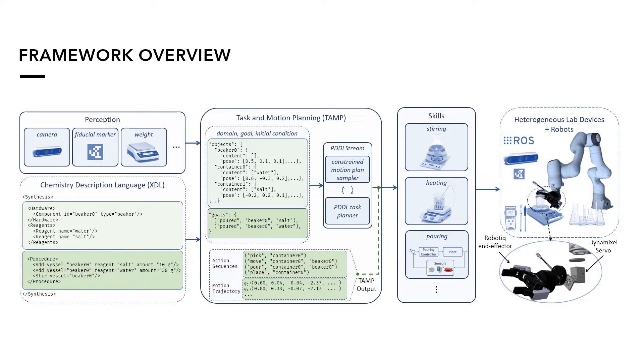The framework is composed of three main components: perception, task and motion planning, and skills. For input, the framework receives chemistry experiment instructions through a standard description language from a chemist and also perceives the workspace. Afterwards, it generates a task and motion plan with considerations for handling vessels with chemical reagents, allowing the robot to perform chemistry experiments autonomously. The proposed framework can also adapt to new workspace configurations in a semi-structured environment and can scale by embedding new perception and skill algorithms, as well as integrating new hardware with the ROS interface.